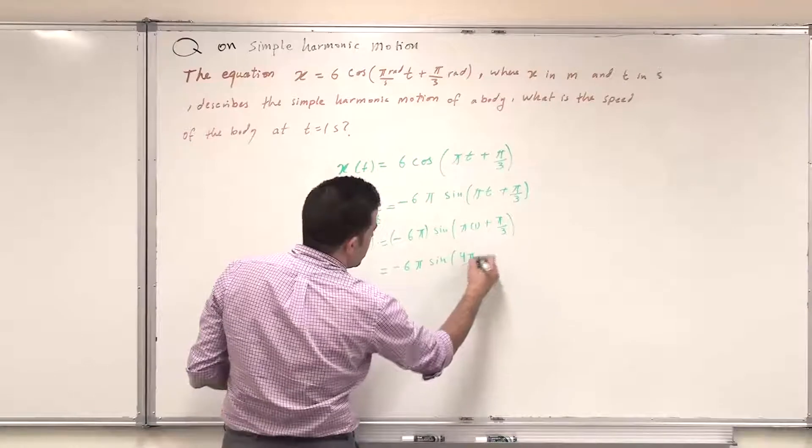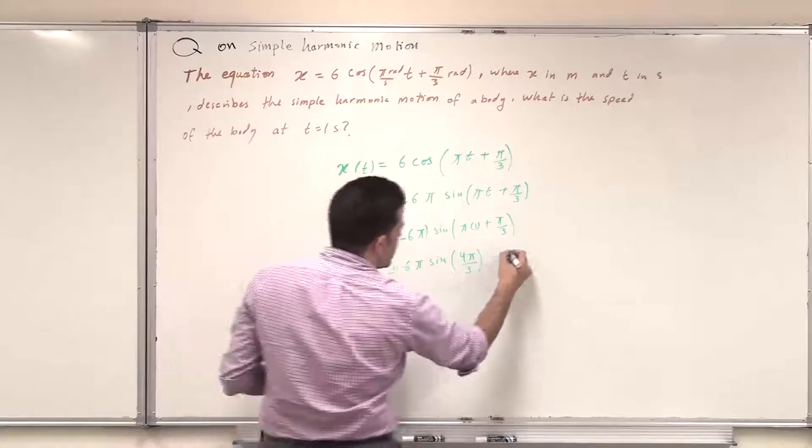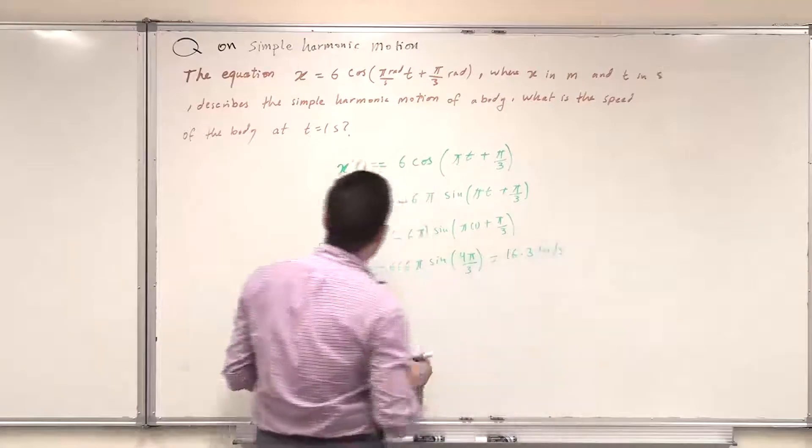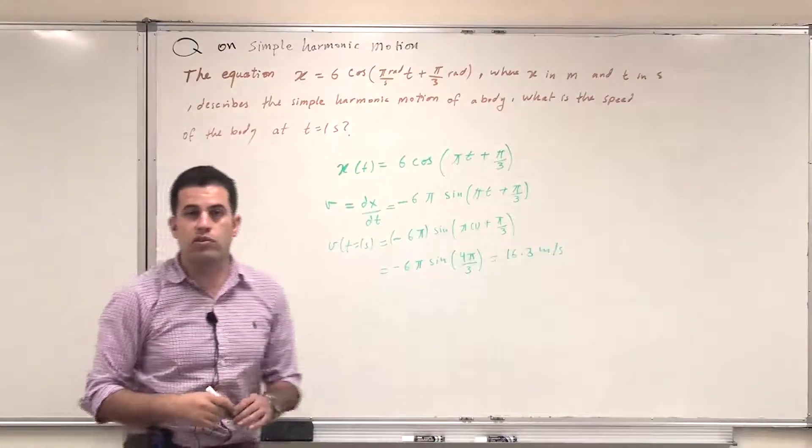So π divided by 3, which will yield 16.3 meters per second. So this is the speed at t equal 1 second. Thank you.